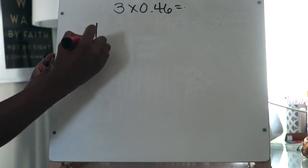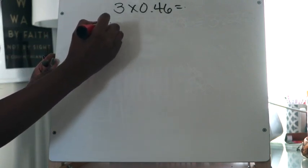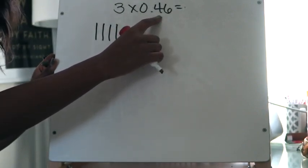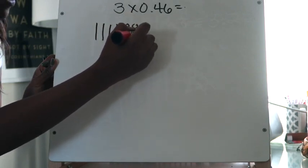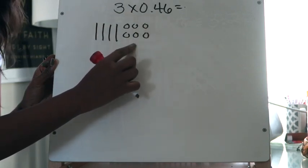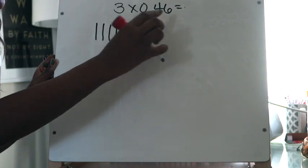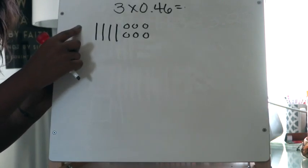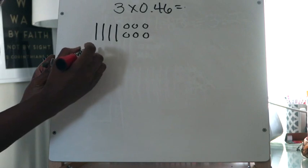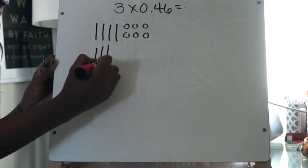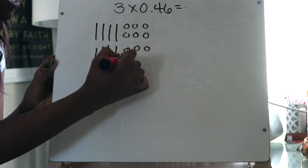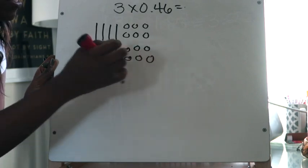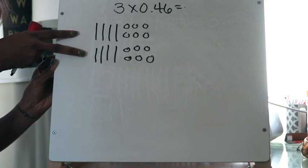Here's my first group of 46 hundredths: I draw four tenths (because there are 4 tenths in 46 hundredths) and six hundredths (because there are 6 hundredths). That's group one. Now group two — same thing, four tenths and six hundredths. That's two groups of 46 hundredths.